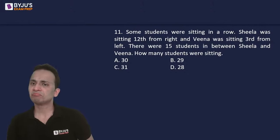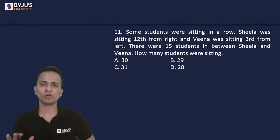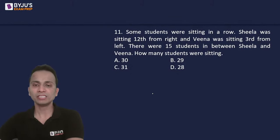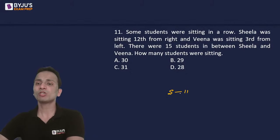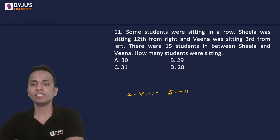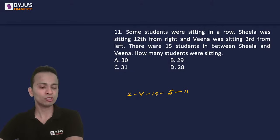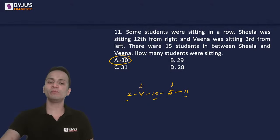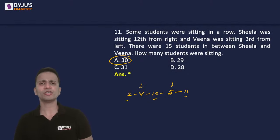Question number 11 is again a row-counting question. Sheila was sitting 12th from the right, so there are 11 people sitting on the right of Sheila. Veena was sitting 3rd from the left, so there are 2 people on the left of Veena. There were 15 students between these two. So counting: 2 + Veena + 15 + Sheila + 11 = 2+1+15+1+11 = 30. The total number of students sitting in this row is 30. The correct answer is option A, which is 30.